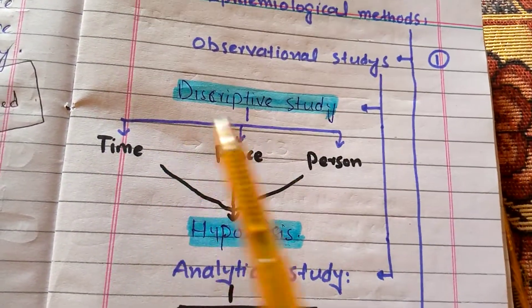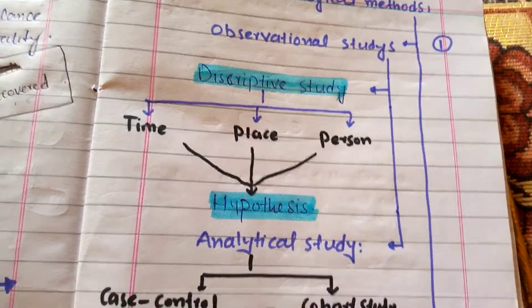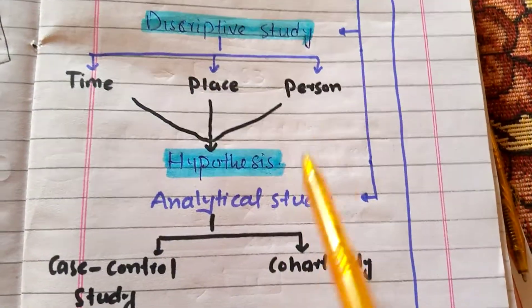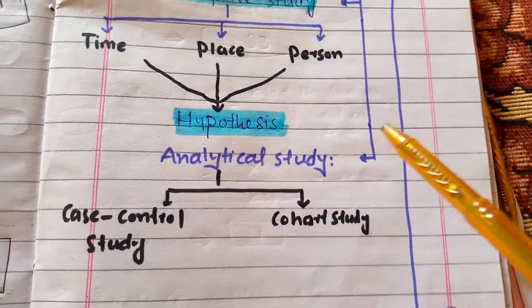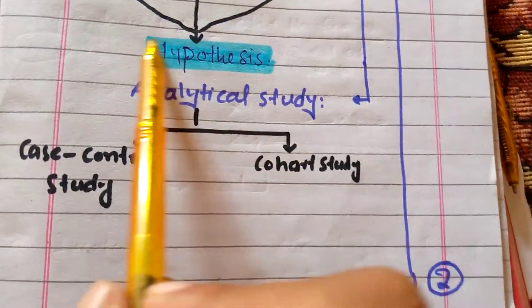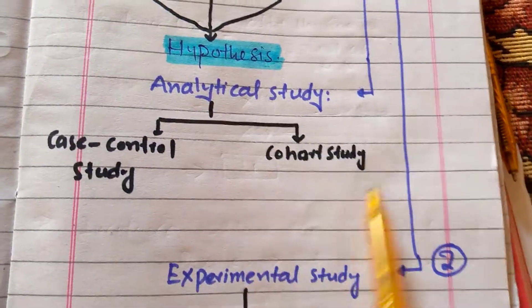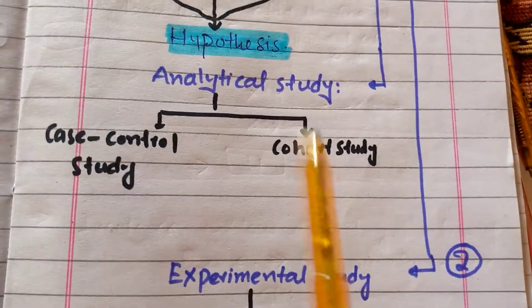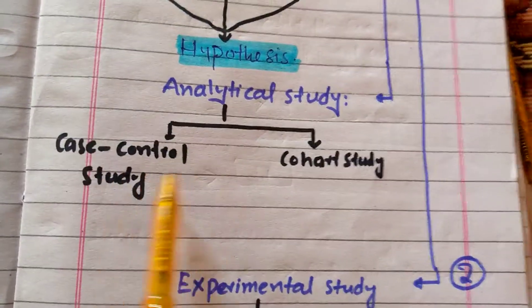After giving hypothesis, analytical study tests the hypothesis to judge whether the hypothesis is true, false, rejected, or accepted. Analytical study has two important studies: case-control study and cohort study. Analytical study shows the relationship between risk factors and disease.